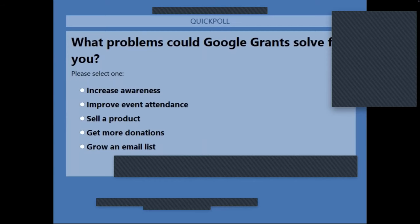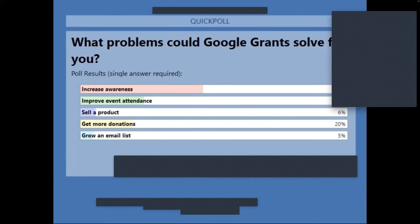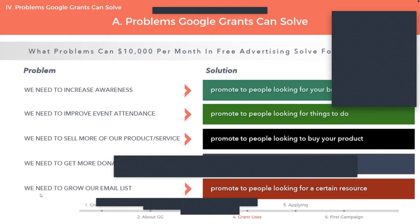It looks like almost everyone has voted. The majority have voted for increasing awareness, followed by improving event attendance. I've seen many nonprofits successfully use the grant to solve these issues for their organization. So I'll jump next into our case studies.